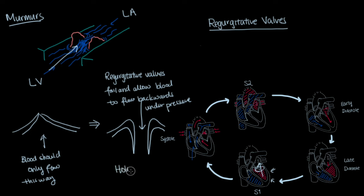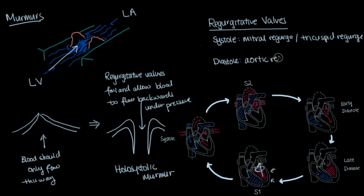These regurgitative valves produce a characteristic holosystolic murmur, representing the constant flow of blood backwards as the valve fails. During systole, a holosystolic murmur may correspond to either a regurgitating mitral or tricuspid valve, while during diastole, a holosystolic murmur may correspond to either a regurgitating aortic or pulmonic valve.